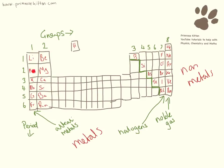So everything in here is in group one, everything here is in group two, everything here is in group three, and everything here is in group eight.